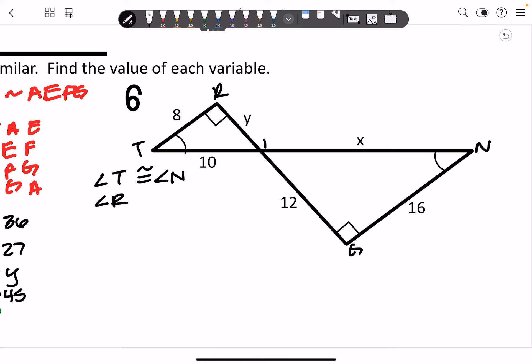Now, T and N, angle T and angle N are congruent. Angle R is congruent to angle G. And then leaving us with angle I being congruent to angle I. And that's just your reflexive property. So from that, you can write that T, R, I is similar to N, G, I.